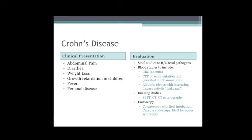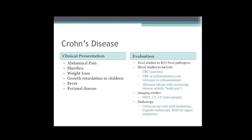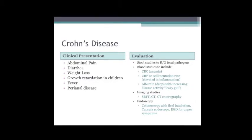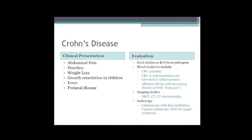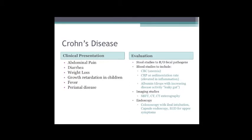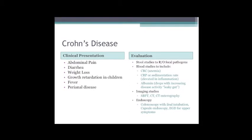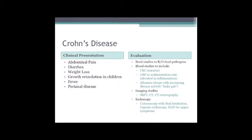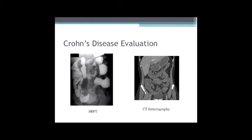Patients present with abdominal pain, diarrhea, and weight loss. In children the first sign may be falling off the growth curve. You want to rule out fecal pathogens and include a CBC, sed rate, and albumin - albumin is very important as it may reflect disease severity. Imaging includes small bowel follow-through, CT enterography, and endoscopy including capsule endoscopy for predominantly ileal disease.